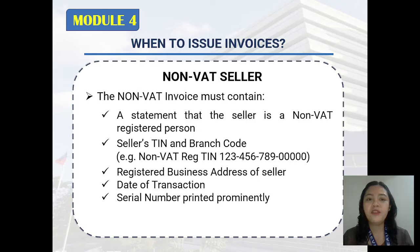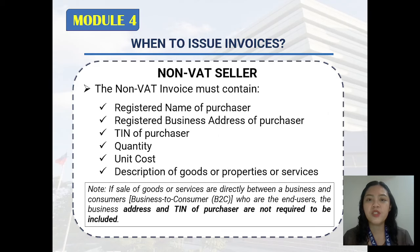The non-VAT invoice must contain a statement that the seller is a non-VAT registered person, the seller's TIN and branch code, the registered business address of the seller, the date of transaction, and the serial number printed prominently. Furthermore, it must also contain the registered name of the purchaser, their registered business address, their TIN, the quantity, unit cost, and description of goods or properties or services.